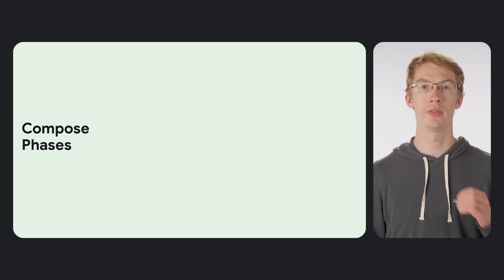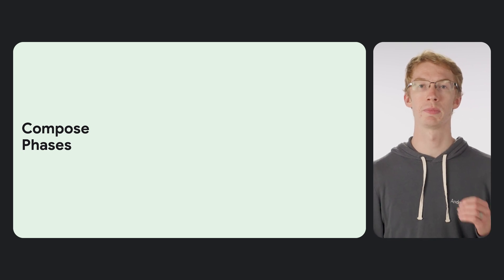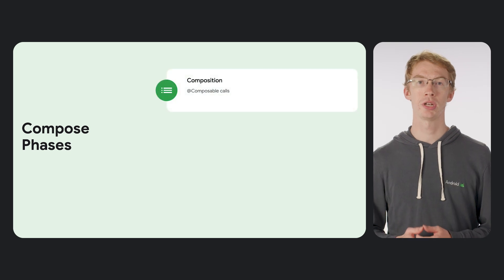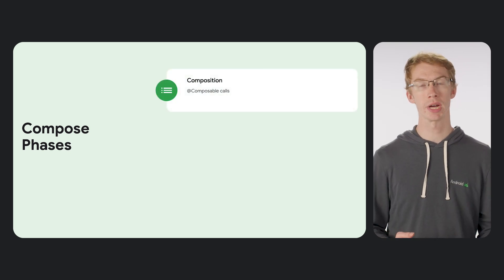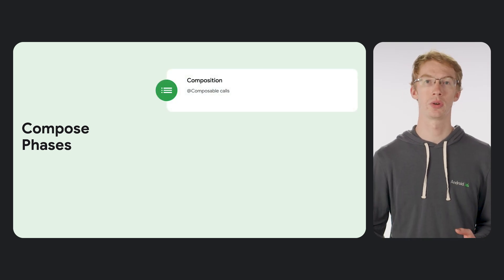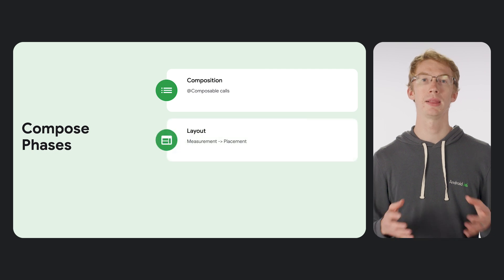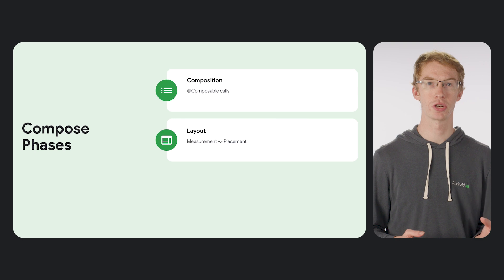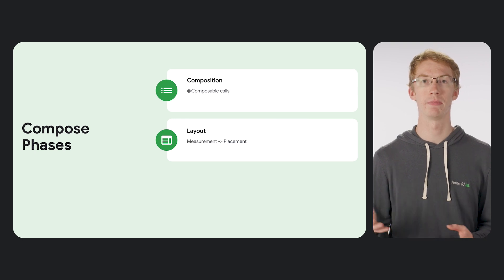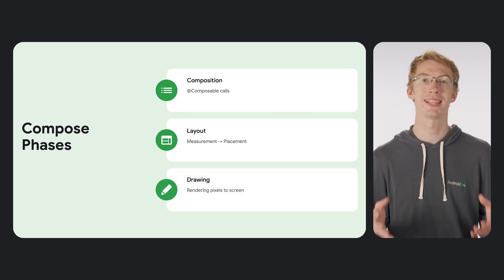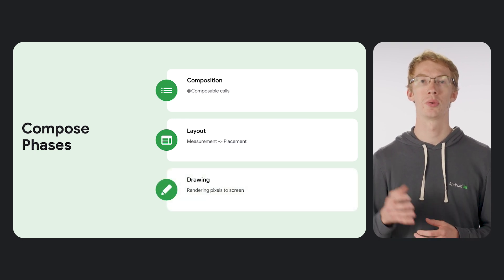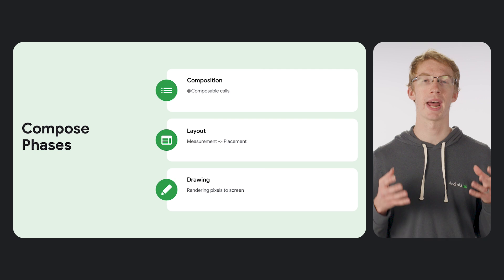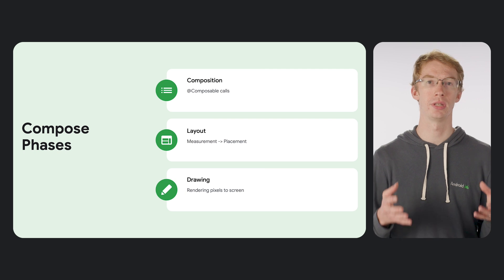These three phases strictly happen in this order from top to bottom. Composition is where Composable calls happen, either for the first time or during recomposition. Layout happens next — this is where the resulting tree of UI elements gets measured and then placed. Drawing is the last step, where the resulting tree of UI elements actually gets rendered to the user.